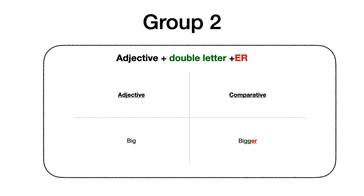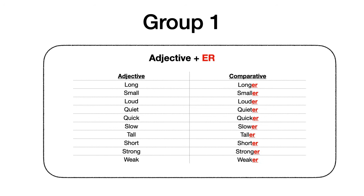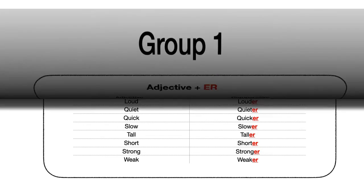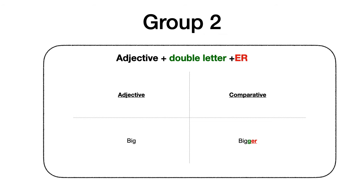Recuerda bien esta palabra: BIG, que tengo que doblar la letra. Doblar la letra significa hacerla doble, colocarla de nuevo, repetirla, y después ER. Entonces estos dos grupos que vimos hoy son los que vamos a aprender primero. El más fácil es agregar ER, y en este otro grupo yo voy a repetir la última letra y le voy a agregar ER — BIG → BIGGER, con dos G.